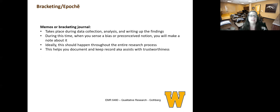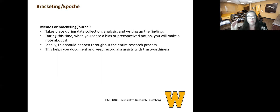The second phase is around that memoing or that bracketing journal. This takes place during data collection, during analysis, and during the write-up of your findings. So as you progress through the research process, when you sense a bias or preconceived notion, you need to make a note about it. You need to write it down. You need to be transparent. Ideally, this should be a step that is taken throughout the whole research process. It helps you to document and keep records that assist with the trustworthiness of your project.